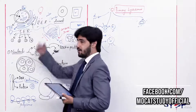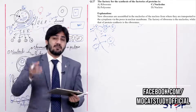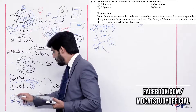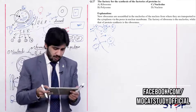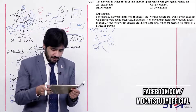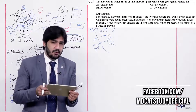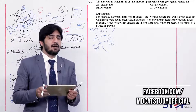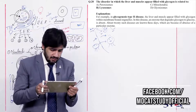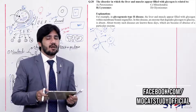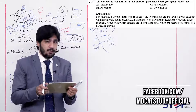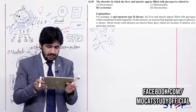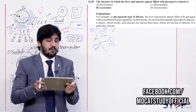Question 27: The factory for the synthesis of proteins is (alpha) ribosome, (beta) polysomes, (charlie) nucleolus, (delta) nucleus. The factory for protein synthesis is the ribosome. Right option is alpha. Question 28 relates to glycogen or lipid accumulation and which organelle is involved — this is related to the lysosome, so the right option is beta — lysosome. Peroxisome relates to cell energy, and glyoxysome is a plant organelle found only in germinating plants.